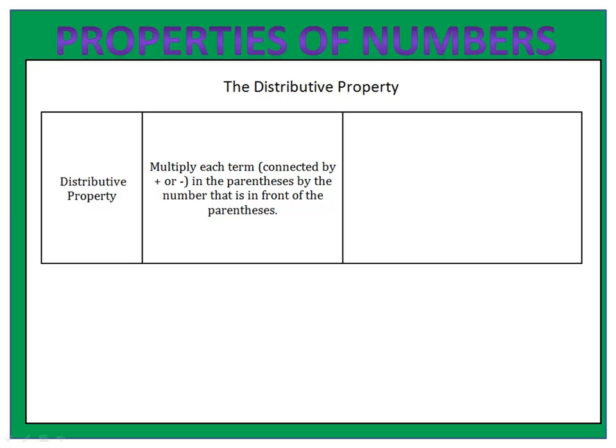Finally, everyone's favorite property — the distributive property. The distributive property is when you have a number out in front of a set of parentheses and then a polynomial inside. We distribute that negative five by multiplying each of the terms inside by negative five. That gives us negative five x minus ten.